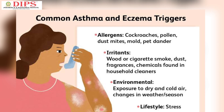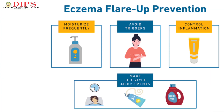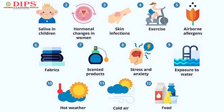Atopic means that you are more likely to get allergic conditions such as asthma and hay fever. Most people can manage their symptoms by getting treatment and by avoiding irritants — things that can affect your skin when you come into contact with them.